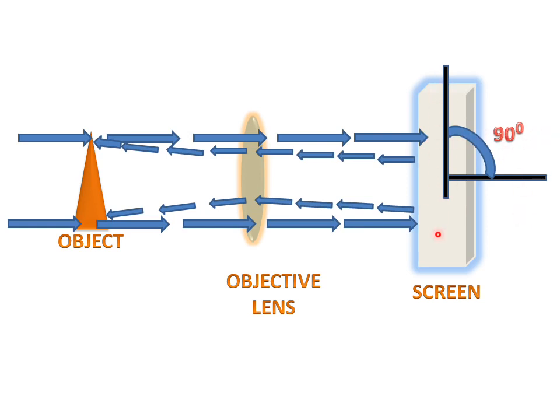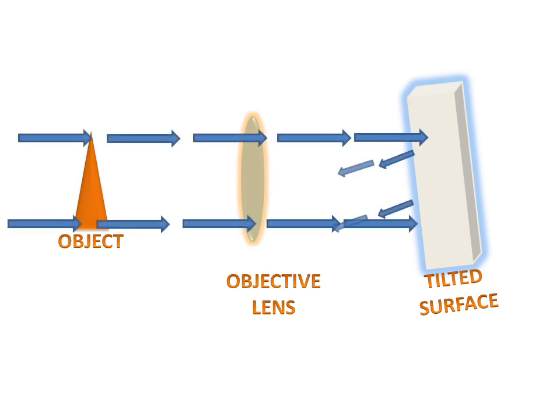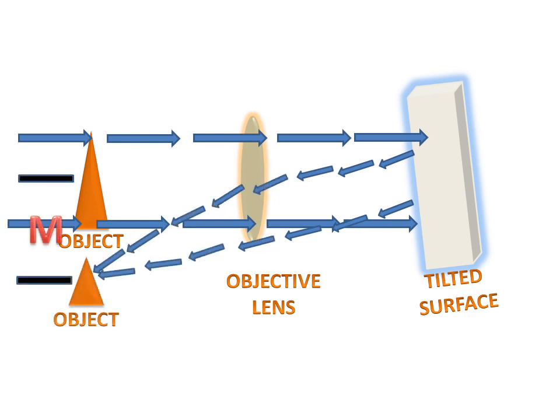If we reflect this screen or tilt this screen through a certain angle, then what will happen? This tilted surface will reflect the beam. Beam will come and the beam will reflected and give an object image. This object image distance from the original will be M, and this will be the focal length from object to the objective lens.